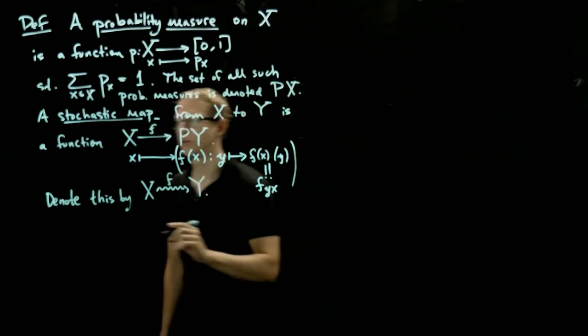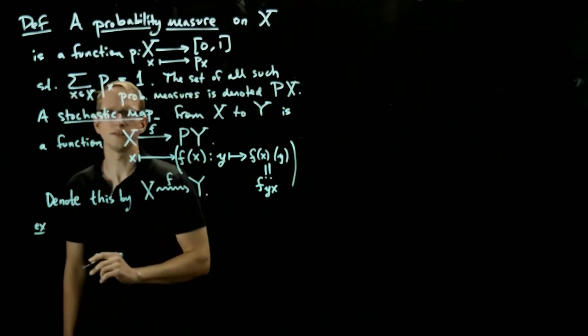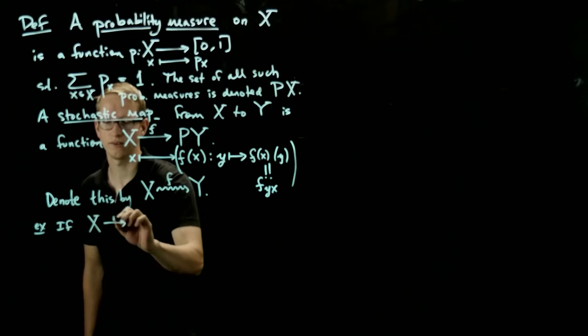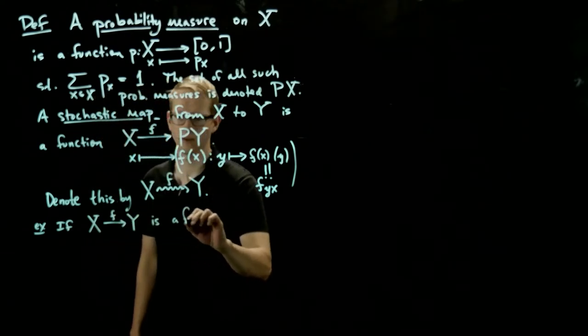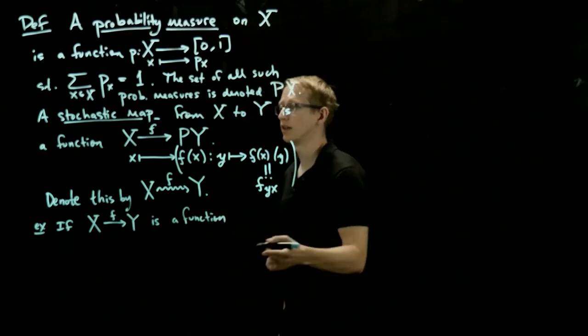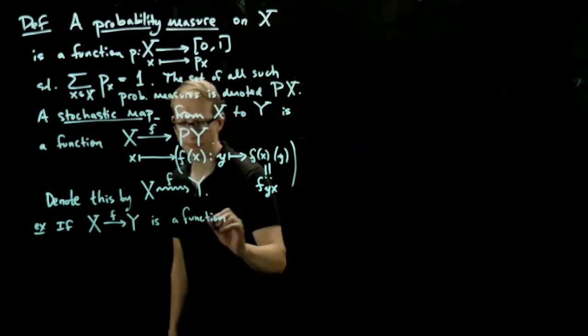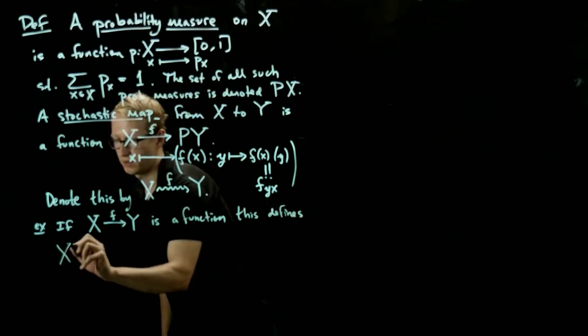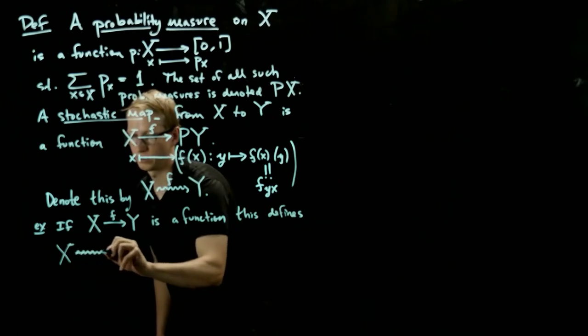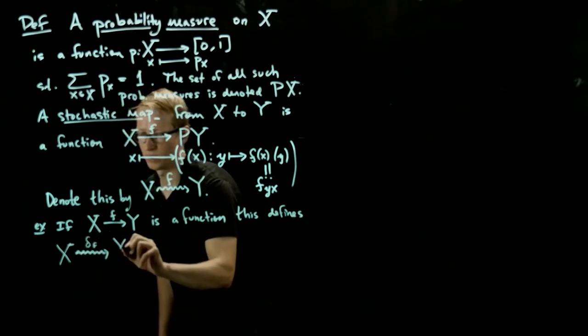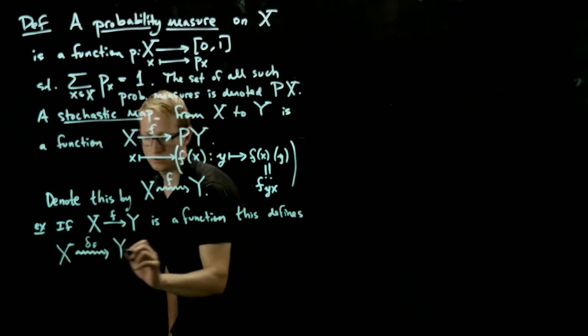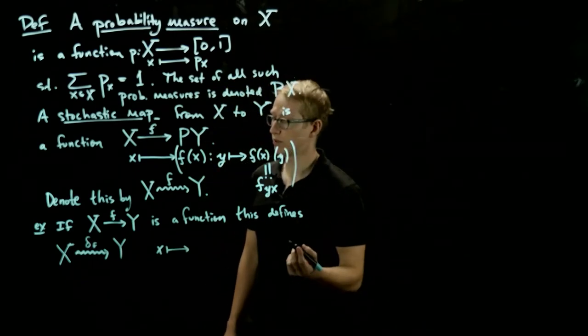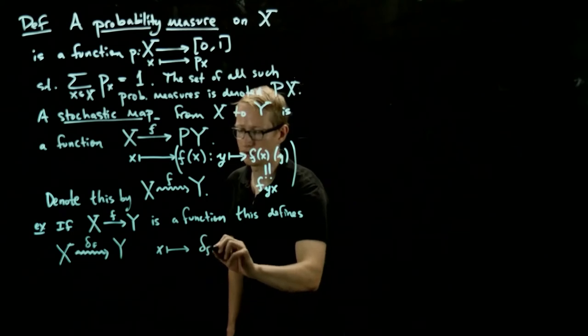The reason we want to do this is because there's a very nice example of a stochastic map if we have a function. So if X to Y is a function, this actually gives us a natural stochastic map. Just for this example, we'll call it delta f. These should be squiggly arrows now. So delta f from X to Y, which sends an element x to a probability measure on Y.